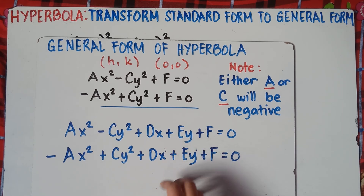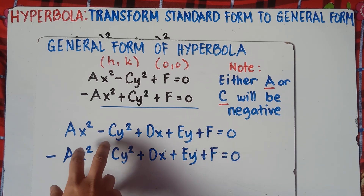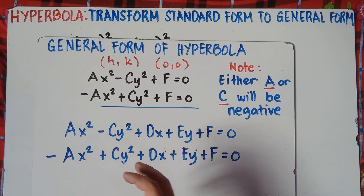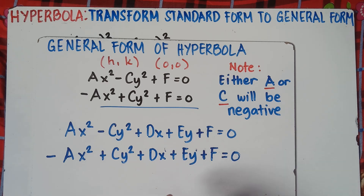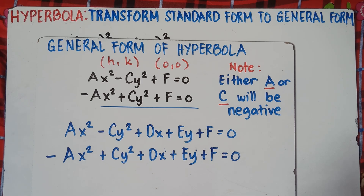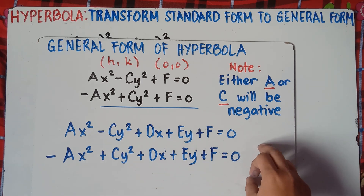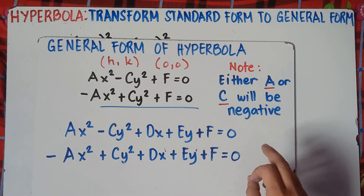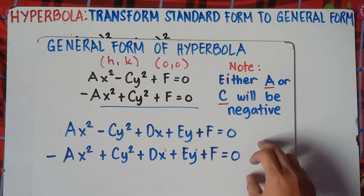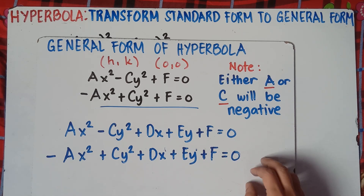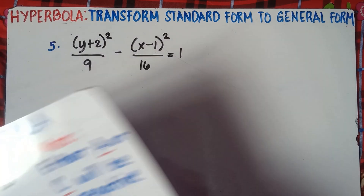Some books use b instead of c — for example, ax squared minus by squared plus dx plus ey plus f equals 0. That's okay, but most books use the c notation. This is the general form we will be using.